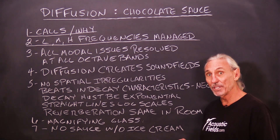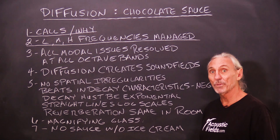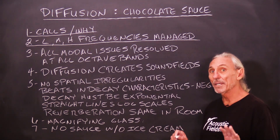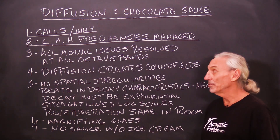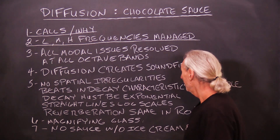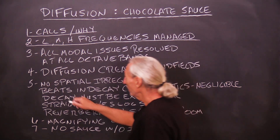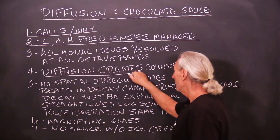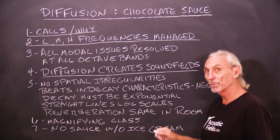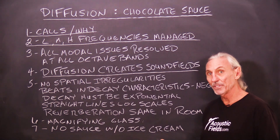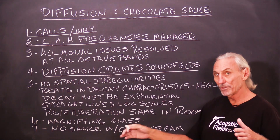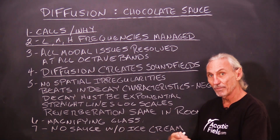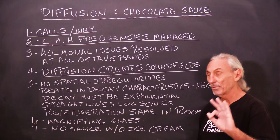The problems that you did treat are fine — diffusion will work with those. But it really highlights the ones that you don't treat. Just remember what the function of diffusion is: the function of diffusion is to create sound fields — front to rear, top to bottom, side to side. We have three major ones.